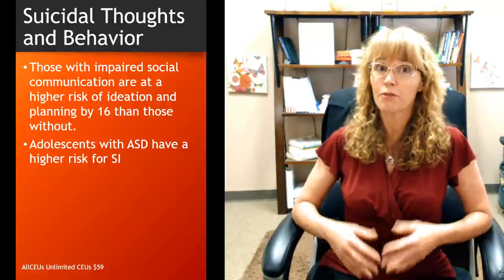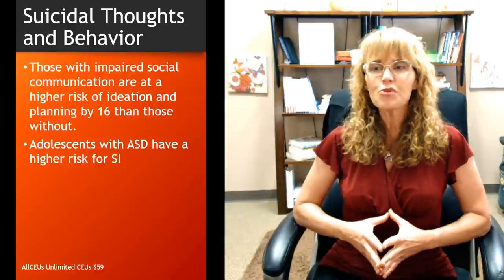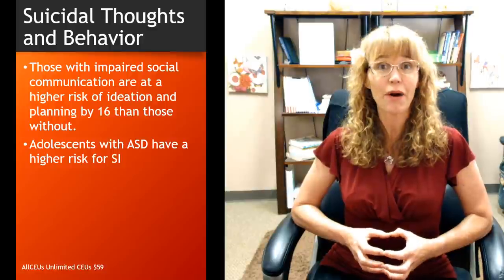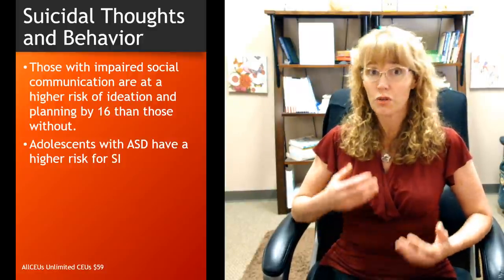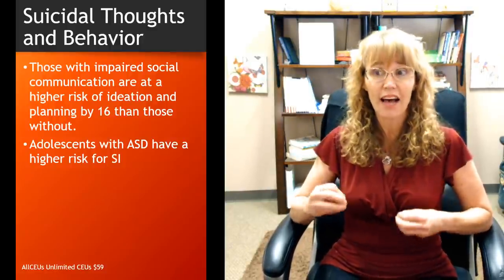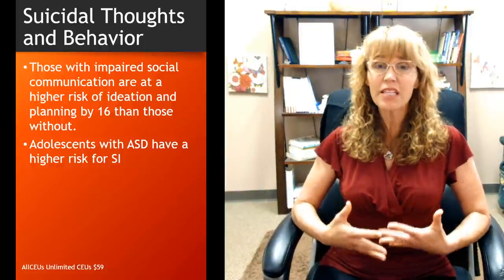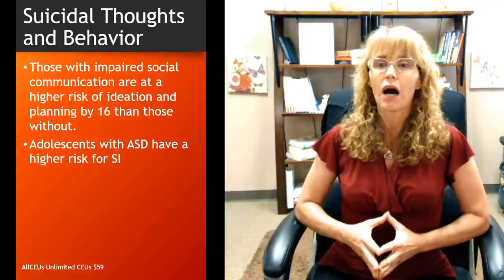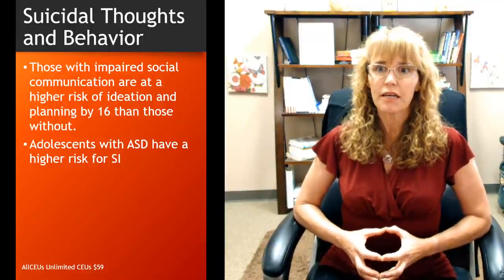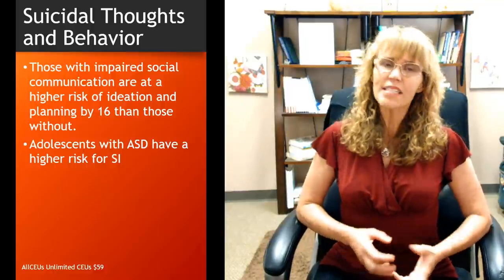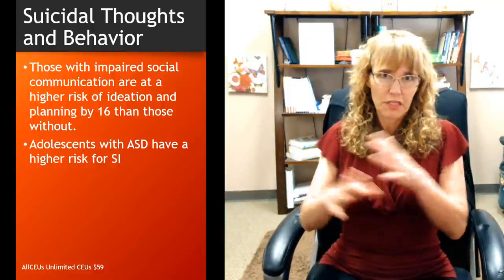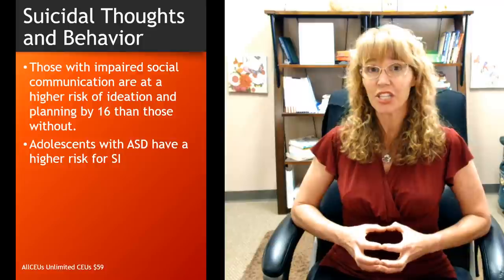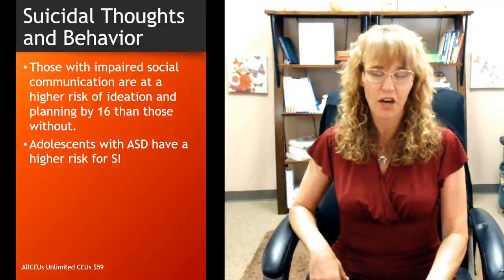Regarding suicidal thoughts and behavior — a new section in the DSM-5-TR — those with impaired social communication are at higher risk of suicidal ideation and planning by age 16 than those with autism who do not have impaired social communication. The ability to communicate needs and wants is strongly related to early suicidal ideation, and people with autism spectrum disorders in general have a higher risk of suicidal ideation in adolescence than their counterparts without ASD.